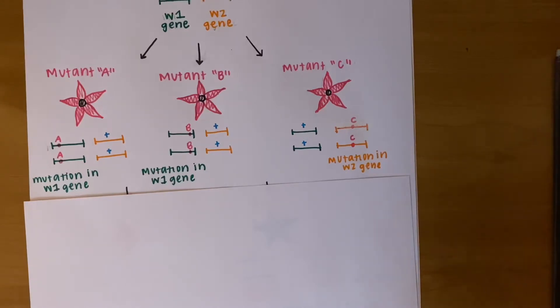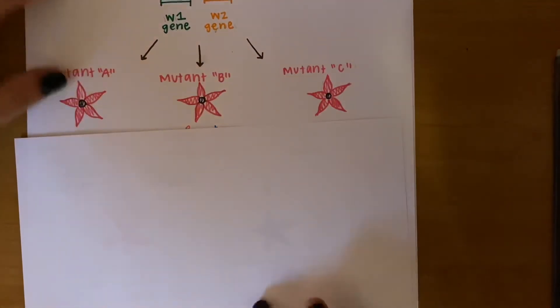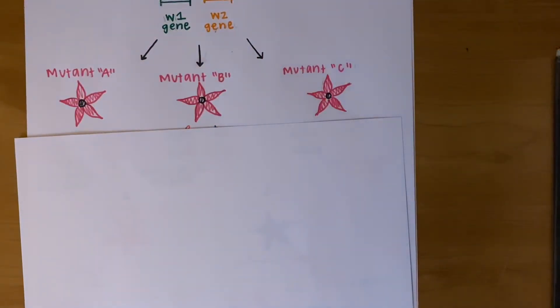Up until now, I've shown the two different phenotypes, blue and pink, and the three mutations that can lead to a pink phenotype. But if we just observed the phenotypes, we couldn't be able to tell if gene W1 or W2 caused the mutation. Now, it's time for the complementation test.